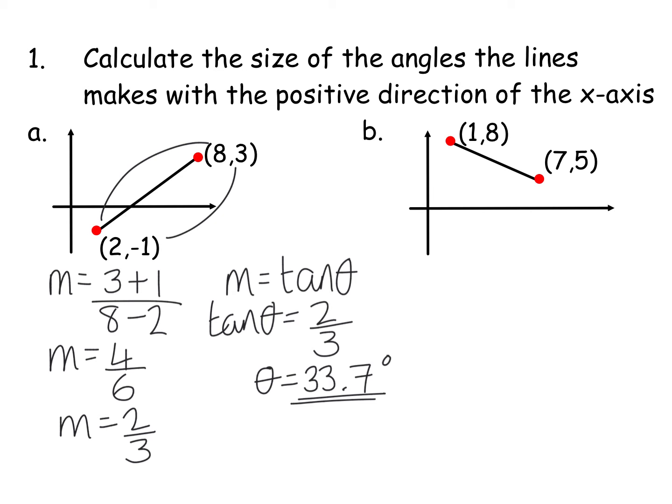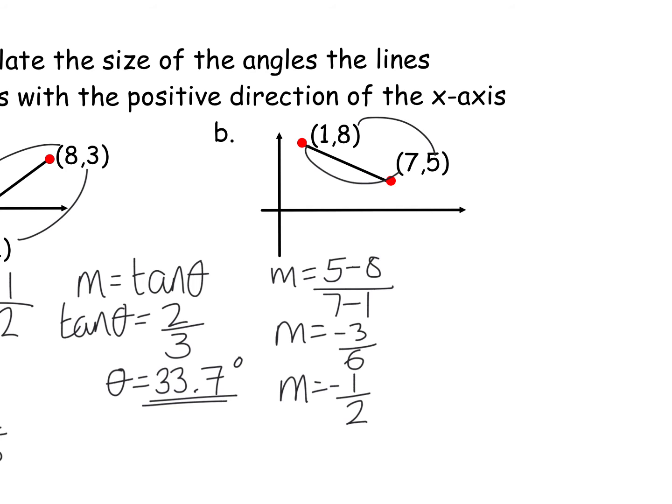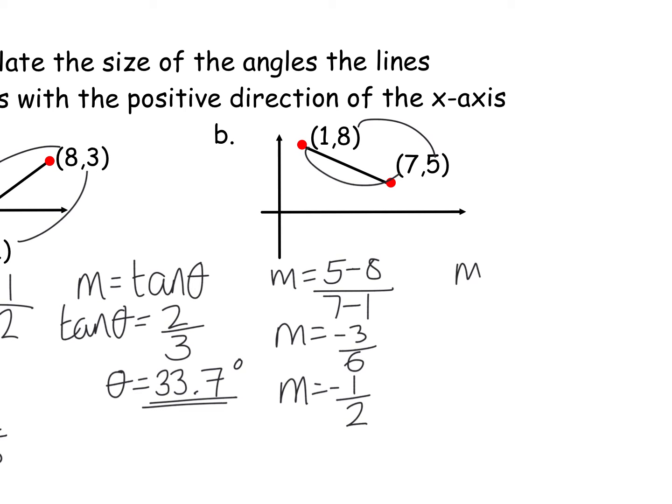Let's do the same again for this one, so we're going to get the gradient, so the gradient will be 5 minus 8, and then 7 minus 1, giving us minus 3 over 6, so a gradient of minus 1 half. And then if we plug this one in to the formula, m equals tan theta, I'm just going to reverse it and say that tan theta equals negative 1 half. Now please remember at National 5, you do not put the negative into your calculator, you do shift tan of 1 half, which gives you an acute angle of 26.6 degrees.